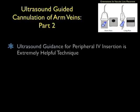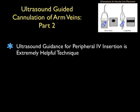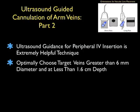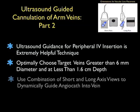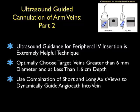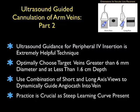In conclusion, thanks for tuning in to the SoundBytes module going over Part 2 of ultrasound-guided cannulation of arm veins. Optimally we want to choose a target vessel greater than 6 mm in diameter and at a depth of less than 1.6 cm to optimize cannulation success. We want to use a longer catheter so we have enough needle and plastic catheter to reach these deep arm vessels. We use a combination of short and long axis views to dynamically guide the angiocath into the vein. There is a steep learning curve for these ultrasound-guided IVs, so practice, practice, practice. I hope to see you back in the future as SoundBytes continues.